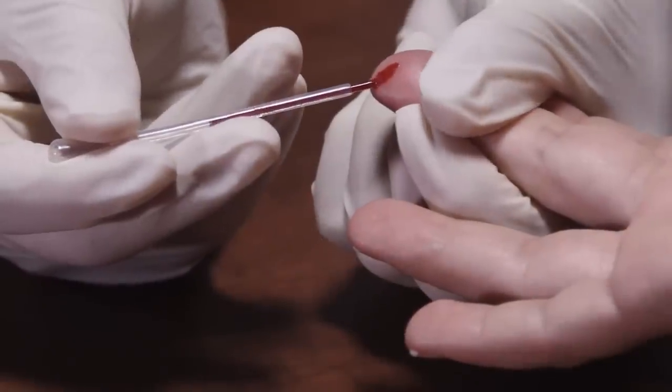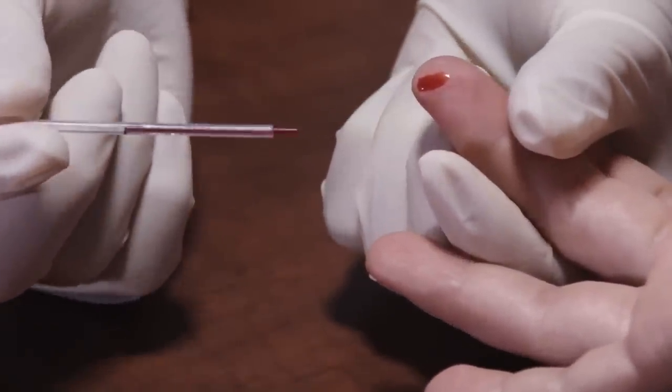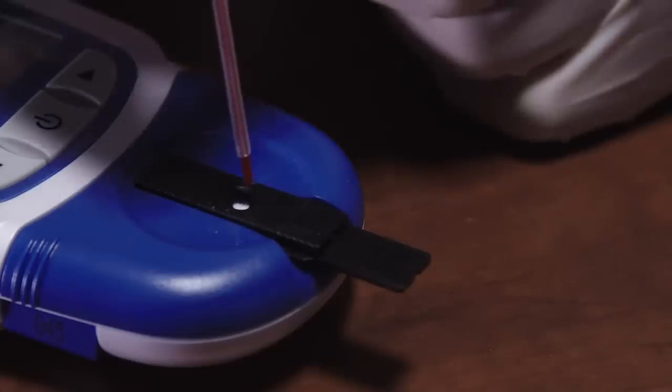Once the sample fills past the black line indicator on the transfer tube, squeeze the bulb to expel the sample onto a test strip or cartridge. Discard the transfer tube in an appropriate manner.